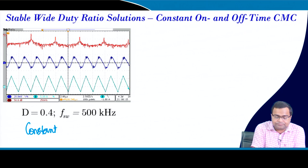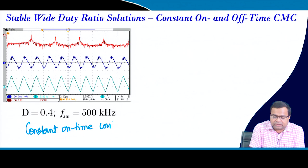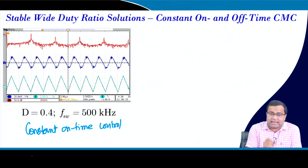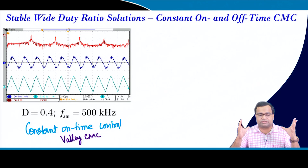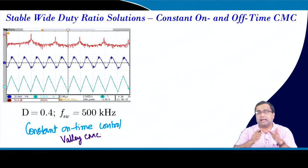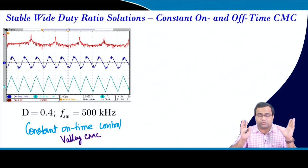The solution is constant on-time control, discussed in week 2. This is analogous to valley current mode control where we control the valley current, but here the on-time is constant rather than the time period. As we will see in lecture 23, there is no current loop stability problem - the current loop is inherently stable for the wide duty ratio range.